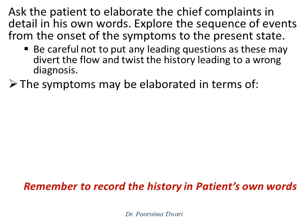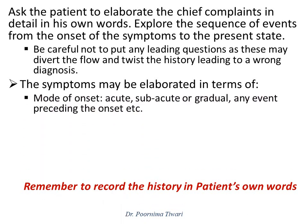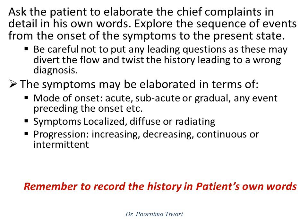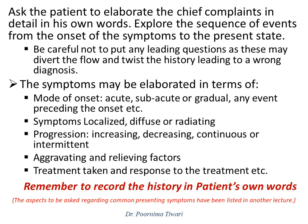Each symptom needs to be elaborated in terms of its location, quality, and mode of onset — whether it was acute, sub-acute, or gradual — or any event which preceded the symptom's appearance; whether it is localized, diffuse, or radiating somewhere; whether it has increased, decreased, or is continuous, or comes intermittently. Ask about the modifying factors, whether the patient has taken any treatment for it, and what has been the response. The questions needed for each symptom will depend upon the symptom itself.